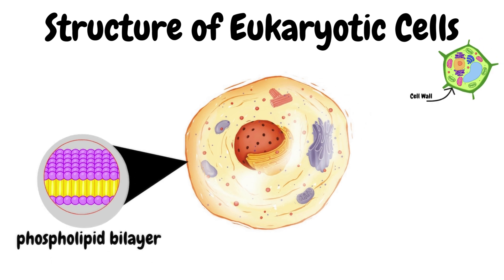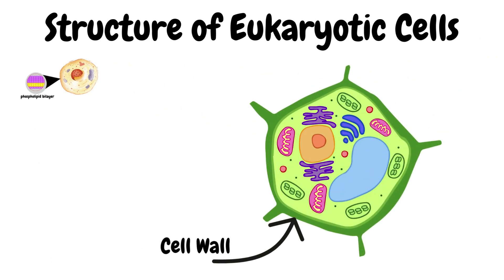Plant cells and some other organisms have an additional rigid outer layer called the cell wall, located outside the cell membrane. The cell wall provides structural support and protection and prevents the cell from bursting from excessive water intake.